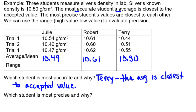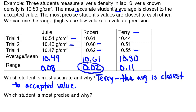Now let's take a look at precision. We're going to look at range, taking the high value minus the low value. For Julie, 10.54 minus 10.46 gives 0.08. For Robert, 10.62 minus 10.60 gives 0.02. For Terry, 10.55 minus 10.44 gives 0.11. So our most precise student was Robert, because the range was the smallest.